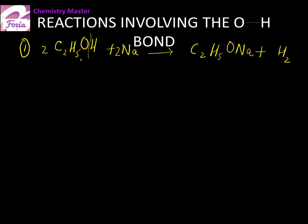Here, the ethanol molecule has released one H from the O-H bond. This shows the acidic properties of alcohol. I'll explain this further when we study the chemistry of carboxylic acids and carbonyl compounds.